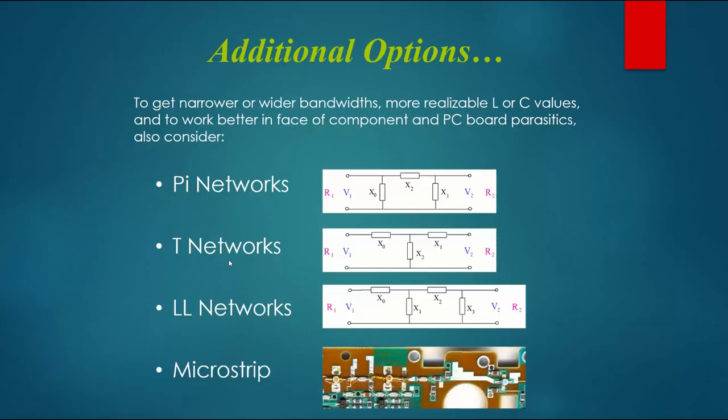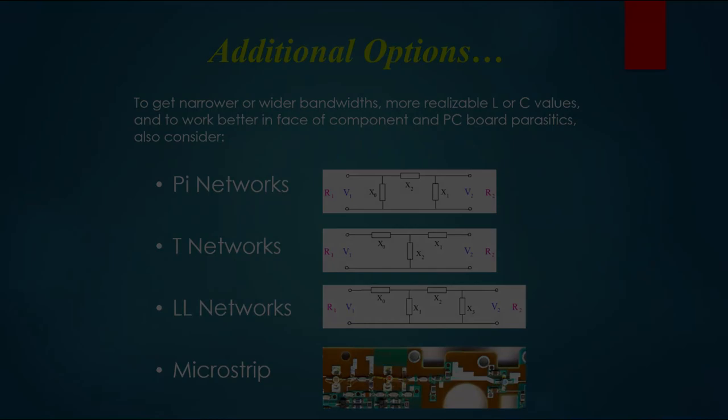LL networks are useful when you want to achieve wider bandwidths in your match. You match from some R1 up to something a little bit higher and then up to something higher still. When you do that, the elements end up having lower Q and the bandwidth is broader. Finally, microstrip is used at very high frequencies. Microstrip matching networks are beyond the scope of this video, but at very high frequencies things become transmission lines. This is generally reserved for microwave design in the several gigahertz frequency region.